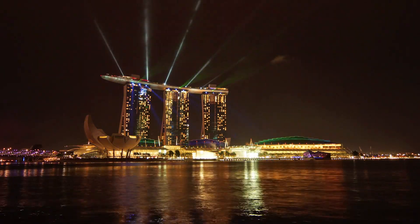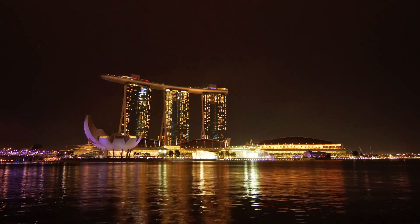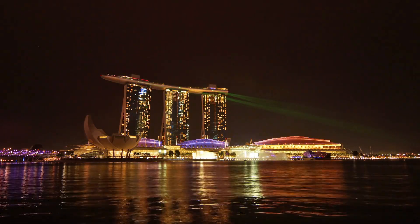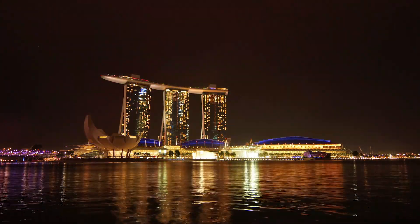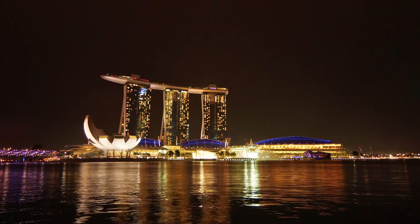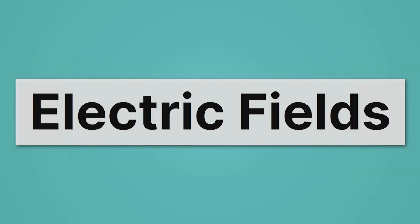Light is so cool, we have entire shows just based on it. We manipulate the color and direction of lights to create a dazzling display like this one in Singapore. But what exactly is light? Let's get ready for a scary definition: light is a varying electromagnetic field. We are going to slow down and take a close look at electric fields and magnetic fields, so we can put them back together and understand what exactly light is. First up: electric fields.